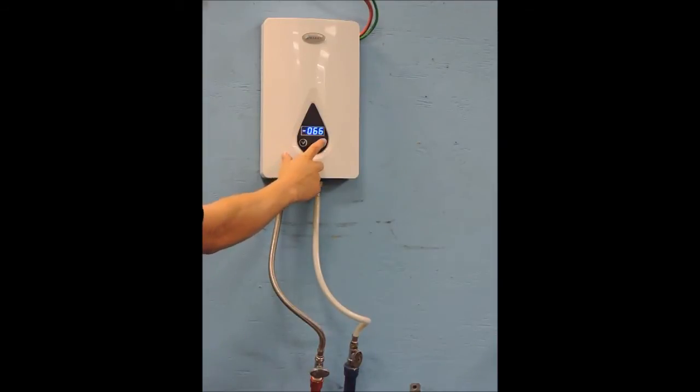After power is supplied, a beep can be heard. If you need to change the display from Celsius to Fahrenheit, then make sure the unit is in the off mode by pushing the power button. Then push the up arrow to cycle between the two options.